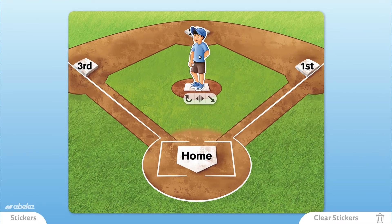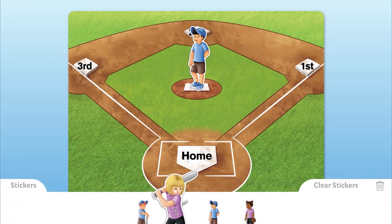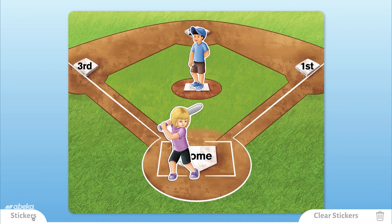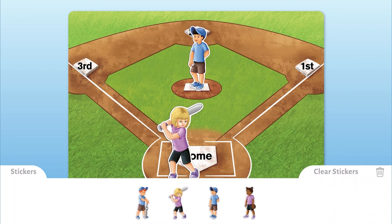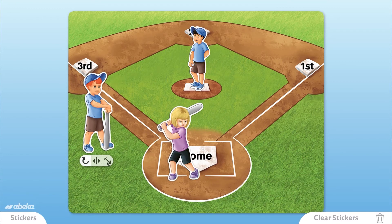To access the stickers, click on the Stickers tab on the bottom left corner. Simply drag and place the stickers anywhere you desire. Each sticker has click-and-drag tools to rotate and scale the sticker.